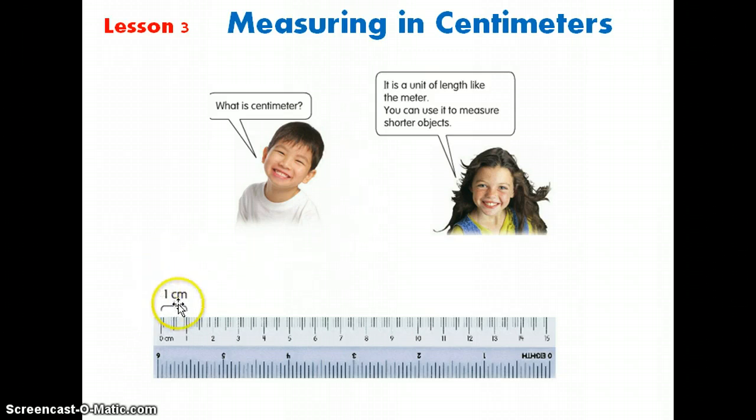If you look down here at the ruler that I have here as an example, here we have a ruler that measures from 0 centimeters all the way to 15 centimeters. From 0 to 1, that's 1 centimeter. From 1 to 2, that's also 1 centimeter. But if I put it together from 0 to 2, that is 2 centimeters.